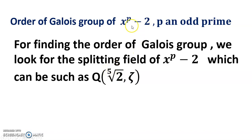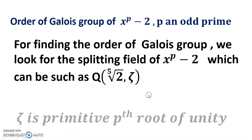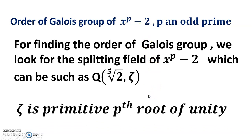Because x^p - 2 = 0 gives 2^(1/p), and where ξ is the primitive p-th root of unity.